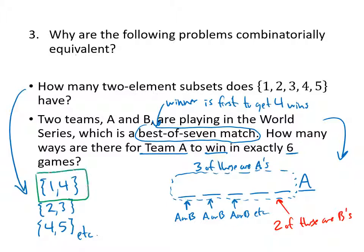For example, if we had the set {1, 4}, the corresponding series would be that B won game 1 and game 4, and then A would have won the remaining four games. That's how we can see that the number of two element subsets is the same as the number of ways that team A could have won this series in exactly six games.